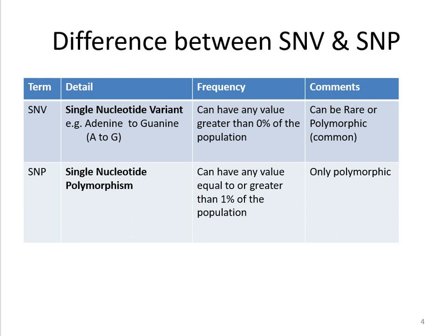What becomes an SNP — Single Nucleotide Polymorphism — is when the frequency is greater than or equal to one percent of the population. So if an SNV is present in at least one percent of the population, it gets the title of SNP, Single Nucleotide Polymorphism. This happens only in the case of polymorphic variants; it cannot be rare.